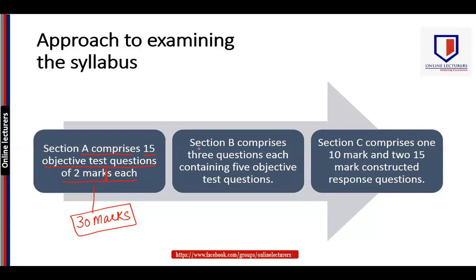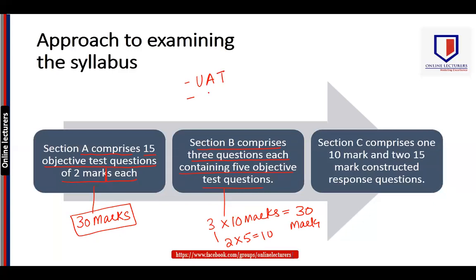Section B contains three questions, each worth 10 marks, giving a total of 30 marks for this section. Each question carries five objective-type sub-questions at two marks each. There are likely chances that these three questions will be related to value added tax, chargeable gains, and IHT — that is, inheritance tax.